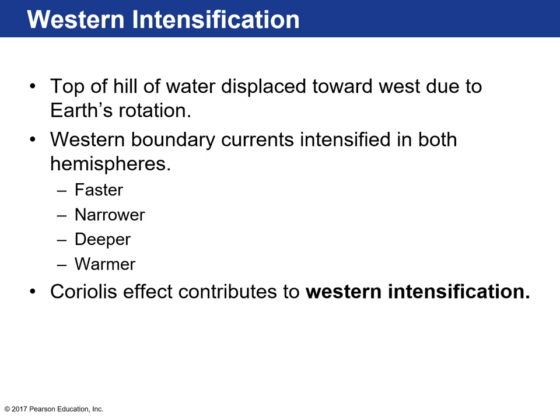Western boundary currents are intensified as a result — they flow faster and have higher velocities on the western sides of ocean basins. They're also narrower, more like fast-flowing rivers. The water that is part of these currents is much deeper, and because they originate from the tropics, much warmer. The combination of gravity and the Coriolis effect contributes to what we call western intensification — the intensification of ocean currents on the western side of ocean basins.